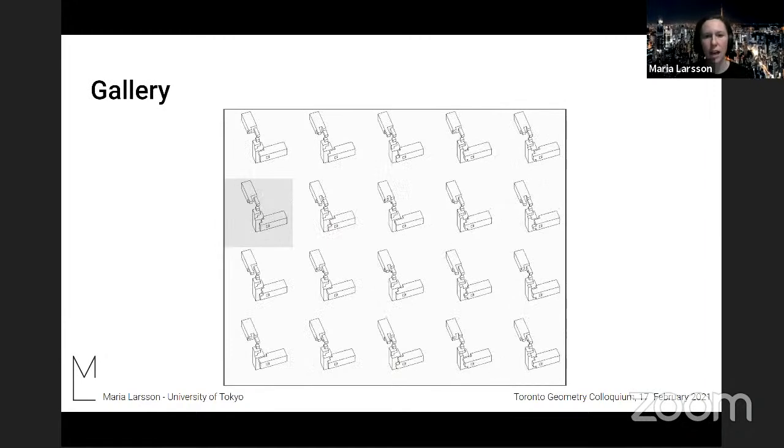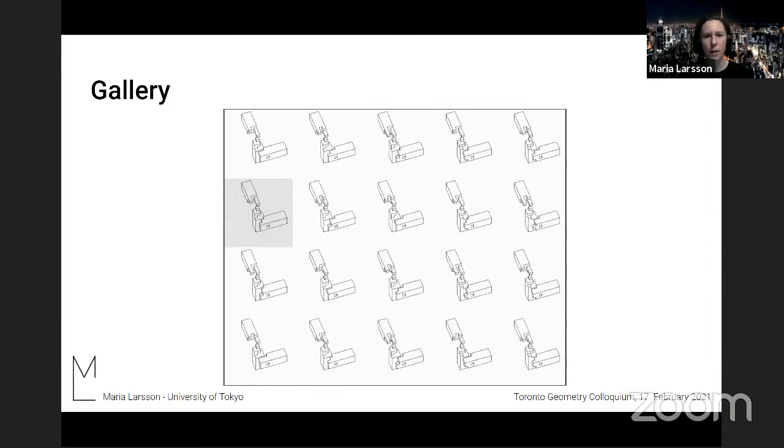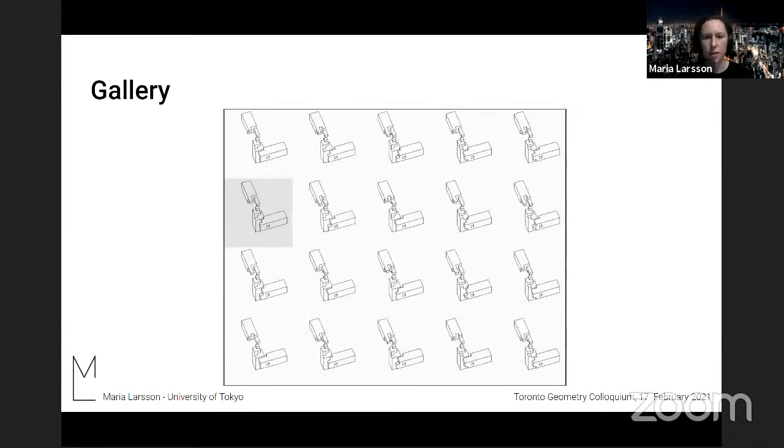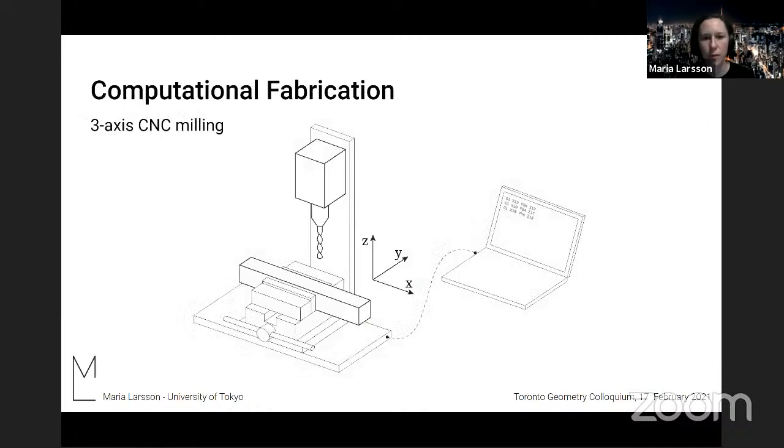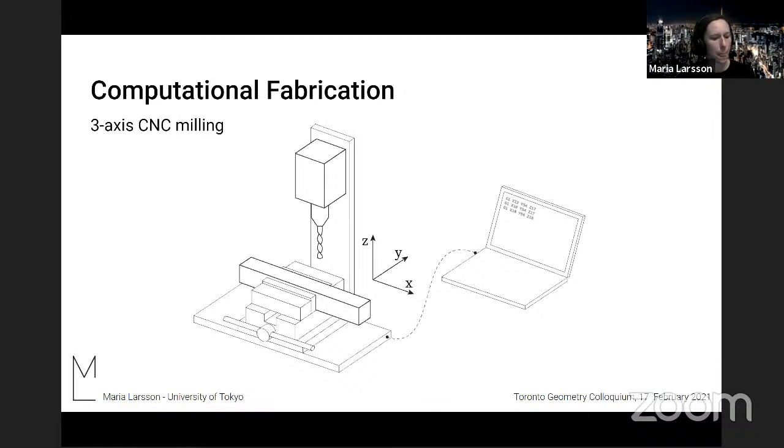And there's also a gallery mode of the interface, and here we show pre-calculated valid joints that are made by a combinatorial search in this voxelized space. And then when you have finalized your design, you can directly export the milling path for fabrication. So what you see here is the path that the tool head will follow to cut out the joint, basically the negative space of the joint.